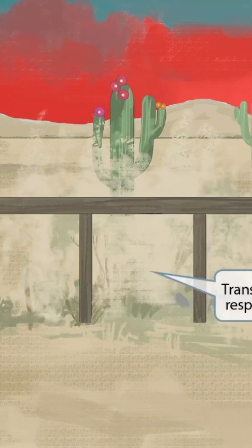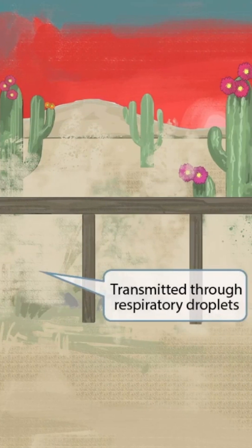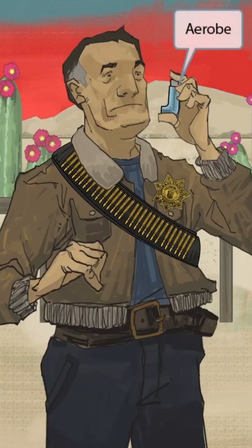Notice that we've added some dusty mist to the scene. Mist is a cloud of tiny water droplets, so we've used it as a symbol to represent transmission through respiratory droplets. So Moraxella is transmitted through respiratory droplets.